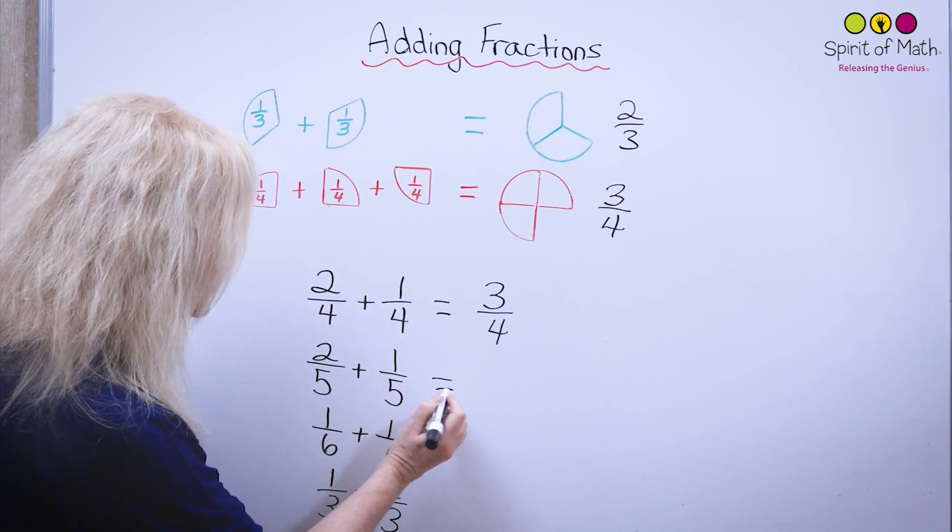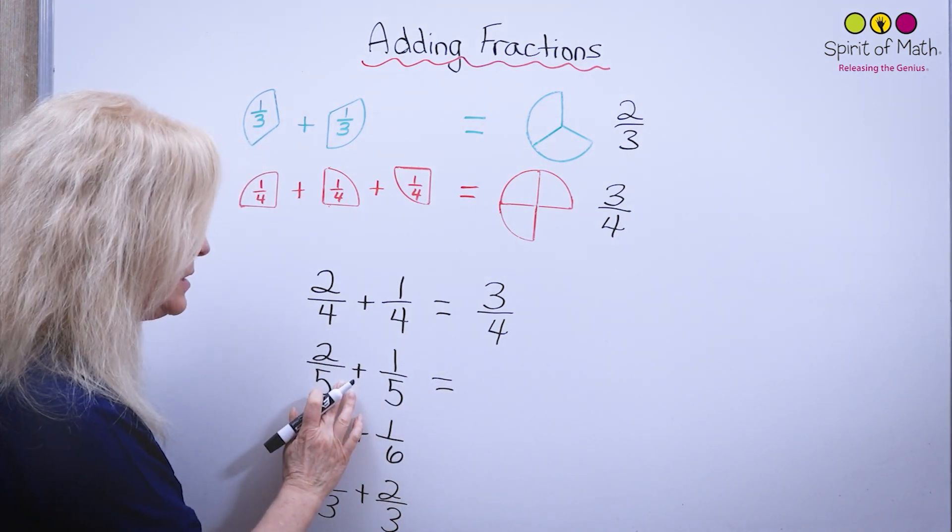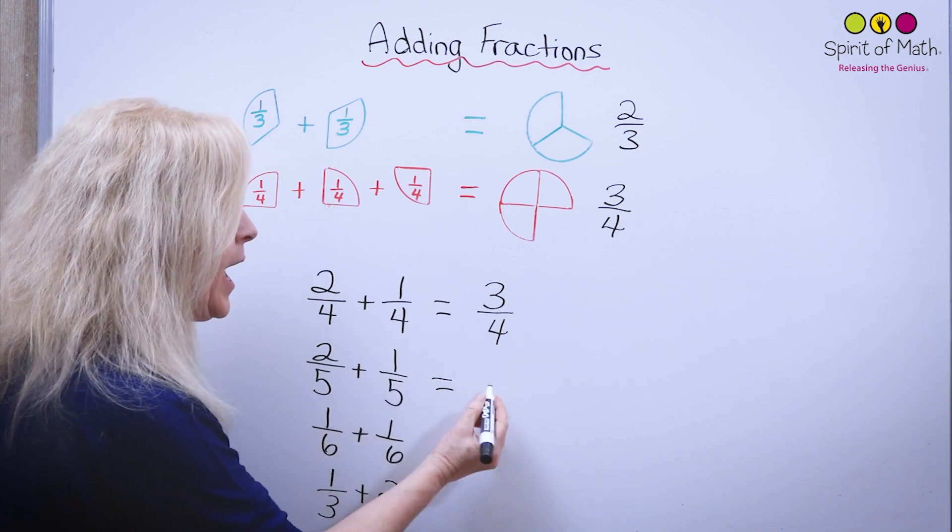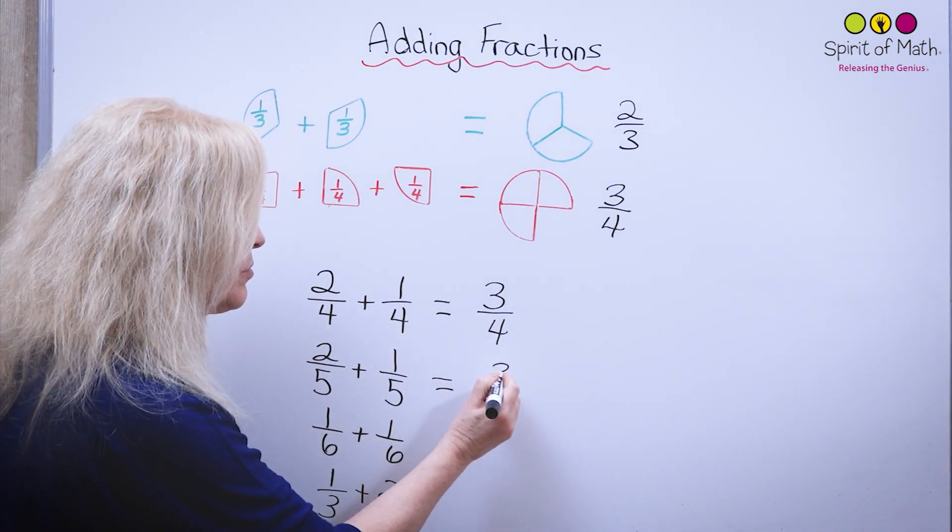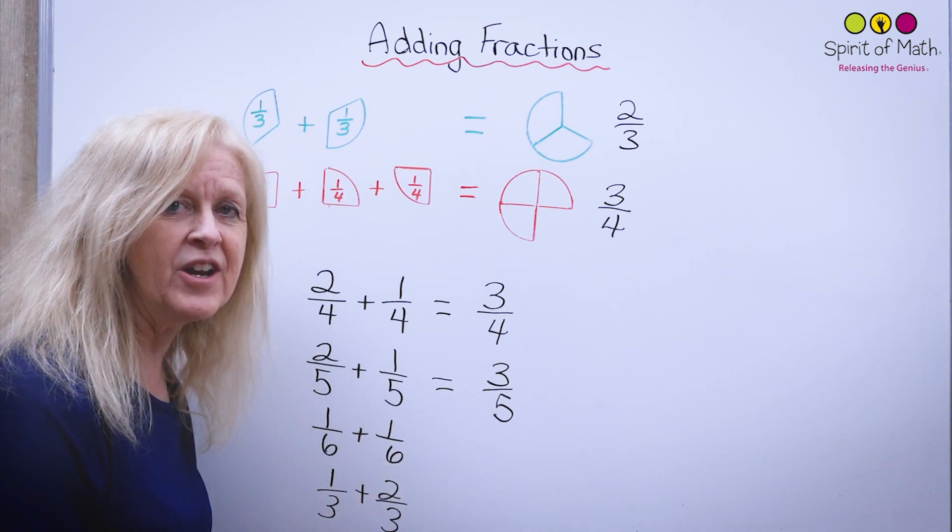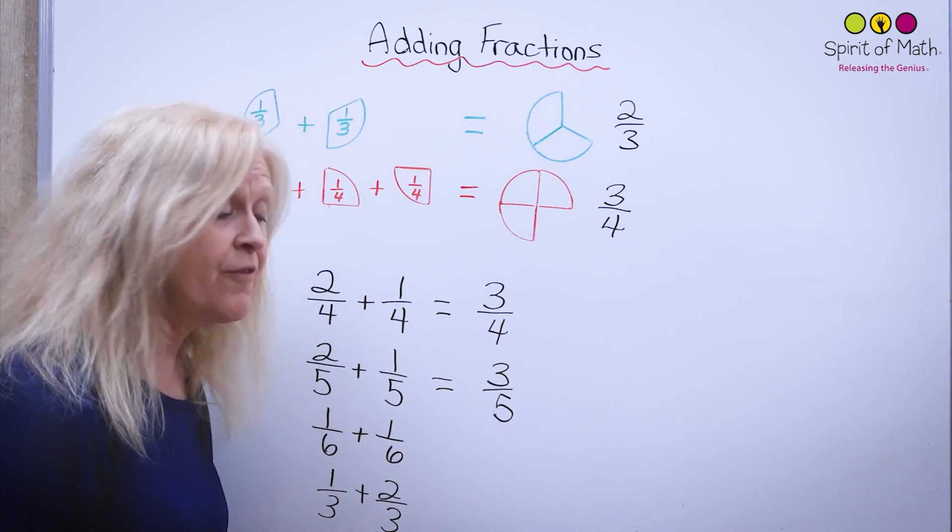Now you have fifths, so you have two fifths plus another one fifth. How many fifths all together? Two plus one is three fifths all together, and that's how you do addition of fractions.